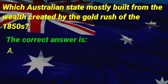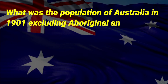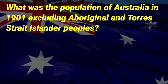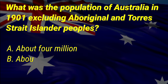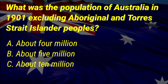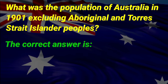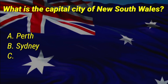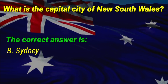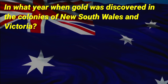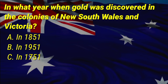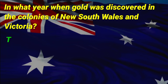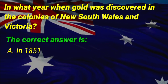What was the population of Australia in 1901, excluding Aboriginal and Torres Strait Islander peoples? A: about 4 million, B: about 5 million, C: about 10 million. The correct answer is A, about 4 million. What is the capital city of New South Wales? The correct answer is B, Sydney. In what year was gold discovered in the colonies of New South Wales and Victoria? The correct answer is A, in 1851.